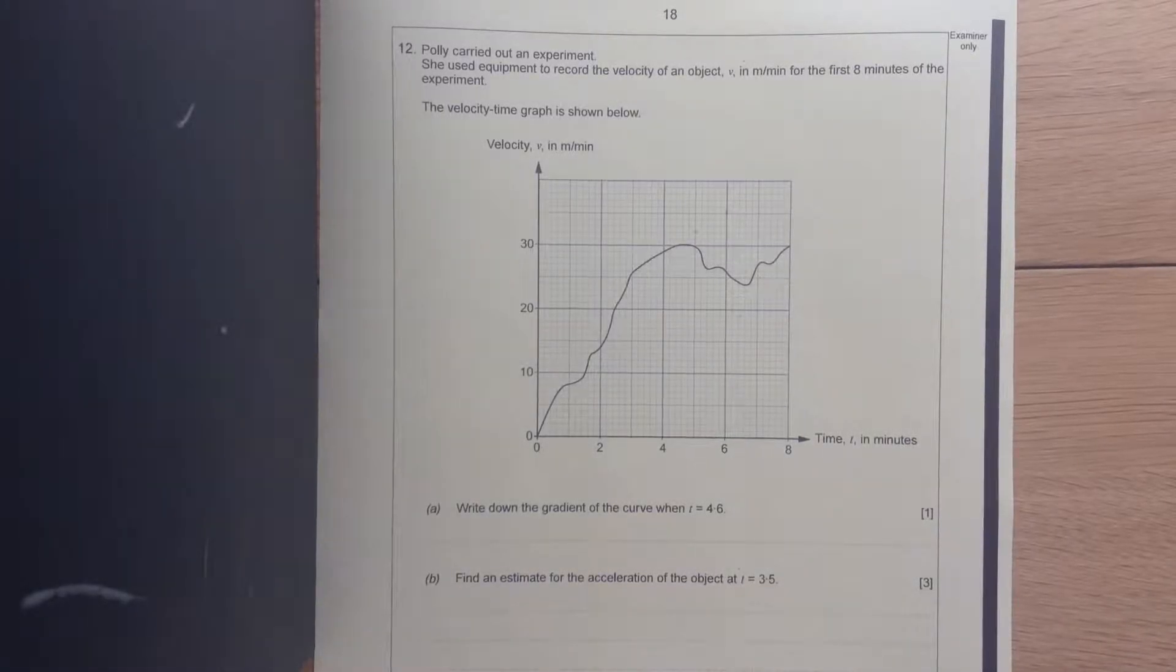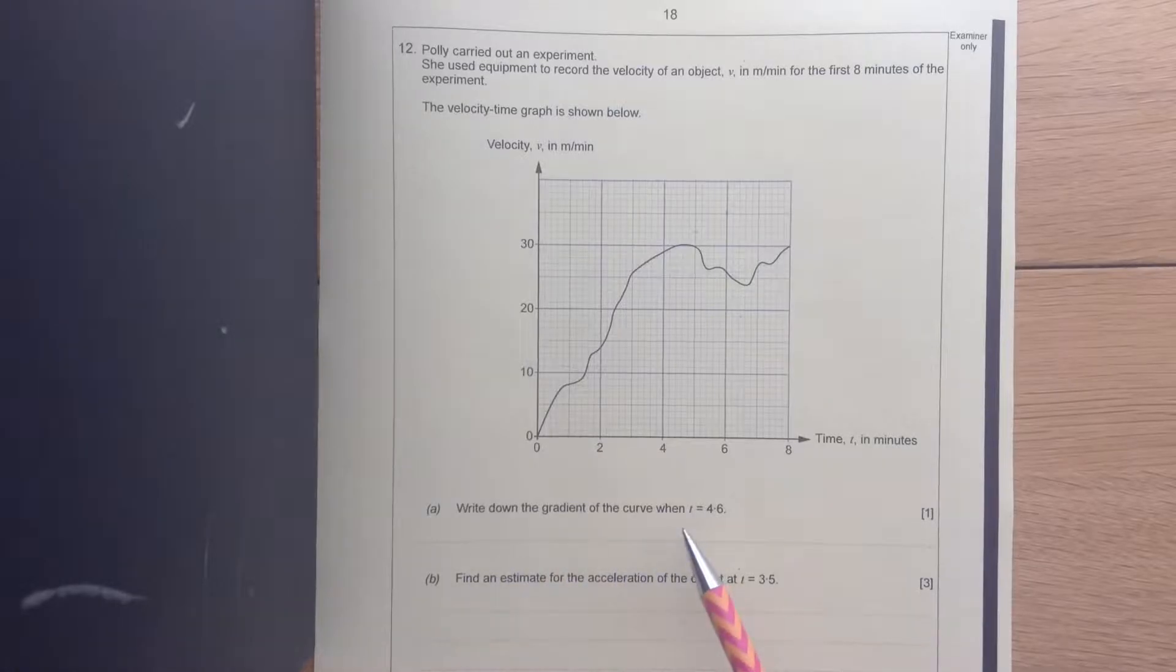Polly carried out an experiment. She used the experiment to record the velocity of the object v in meters per minute for the first 8 minutes of the experiment. The velocity time graph is shown below. Write down the gradient of the curve when t equals 4.6.